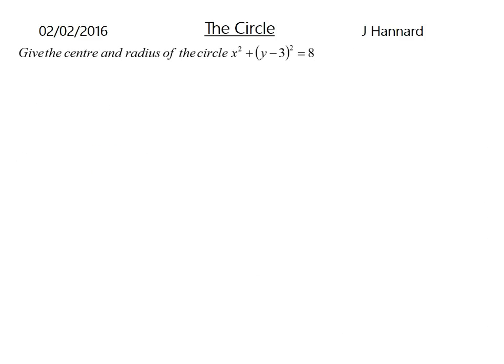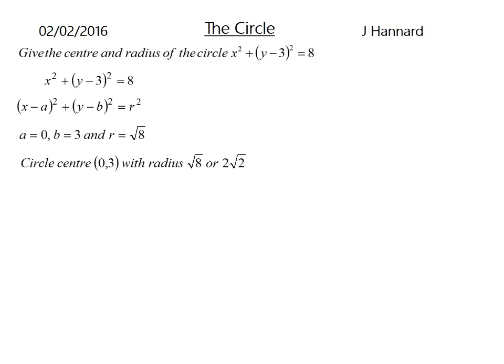Same again here. Give the centre and radius of the circle X squared plus Y minus 3 squared equals 8. So that's our equation of a circle. There's nothing attached to the X this time, so we know that the X coordinate of the centre is just going to be 0. And this time we swap the sign of the minus 3 inside the bracket, and it becomes a plus 3. And remember, 8 is R squared, so the radius will be the root of 8, or if you want to cancel that down, it will be 2 root 2.